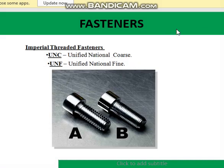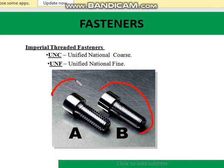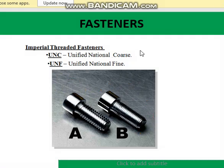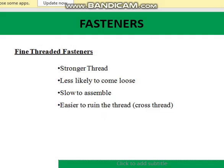The next slide is showing imperial threaded fasteners. There are two types: UNC — Unified National Coarse — and UNF — Unified National Fine. Fine means it's the one with threads which are small, while coarse has larger threads. Fine threaded fasteners are better because they have stronger threads and are less likely to come loose, but they are slow to assemble.